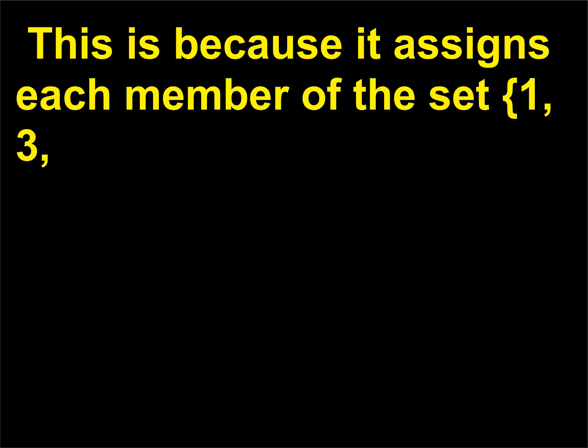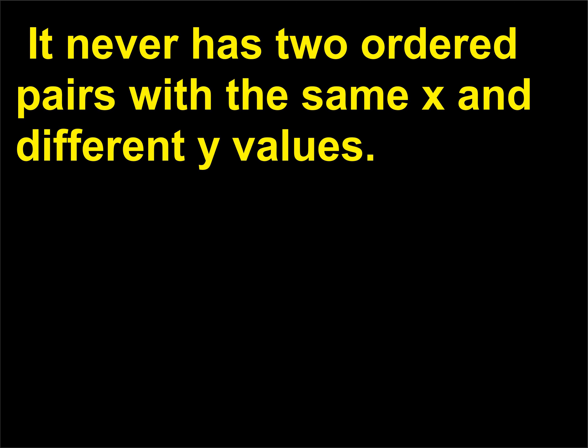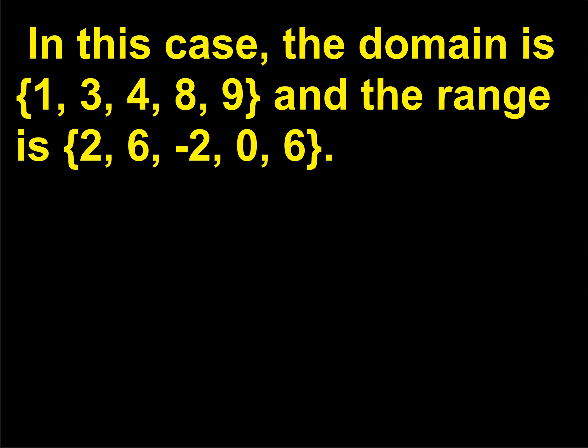This is because it assigns each member of the set {1, 3, 4, 8, 9} exactly one value in the set {2, 6, −2, 0, 6}. It never has two ordered pairs with the same x and different y values. In this case, the domain is {1, 3, 4, 8, 9} and the range is {2, 6, −2, 0, 6}.